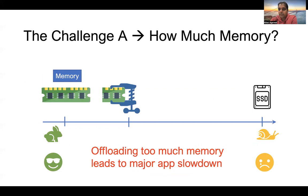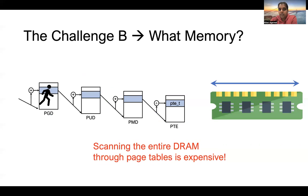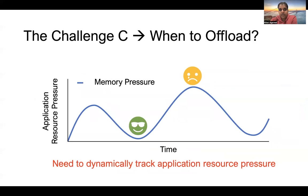However, we had to tackle a bunch of challenges. First, we needed to figure out how much memory to offload — we could not take the entire memory and just put it on slower tiers, as applications would see a huge slowdown. Next, we needed to figure out which particular memory pages to offload, since scanning the entire page tables would be very expensive in software. Thirdly, we needed to figure out when to offload the memory, being careful not to offload memory that the application is using extensively.